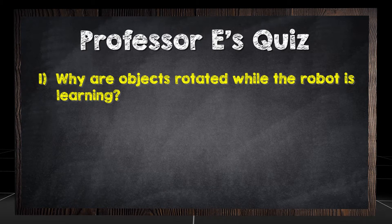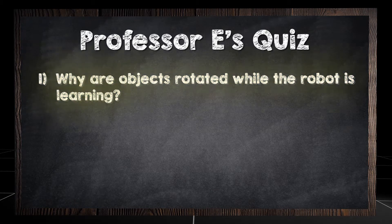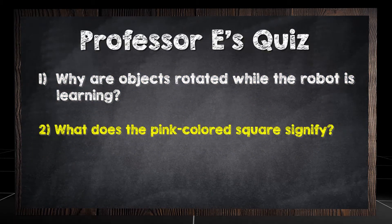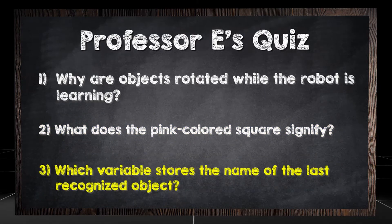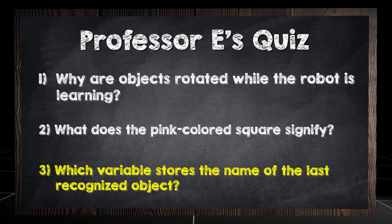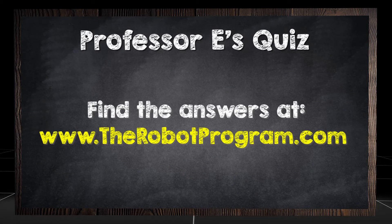Why are objects rotated while the robot is learning? What does the pink colored square signify? Which variable stores the name of the last recognized object? Find the answers at therobotprogram.com.